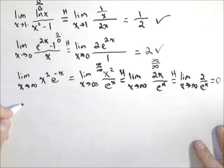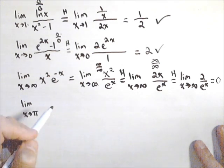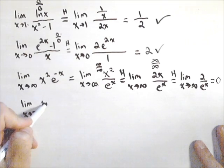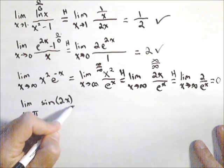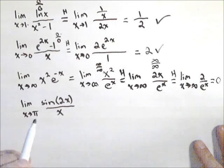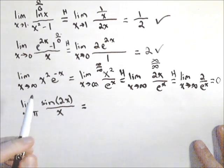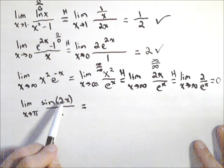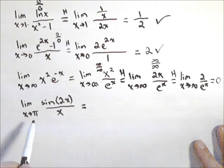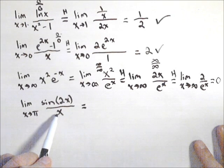Let me do one more example here. So limit as x goes to pi of sine of two x over x. So when we do our direct substitution, we get sine of two pi, which is zero. On the bottom, we actually get pi.